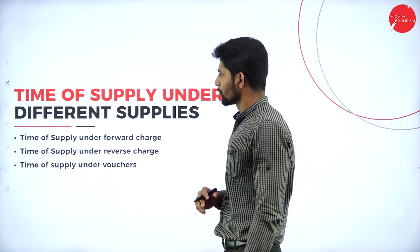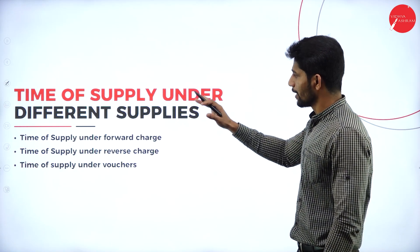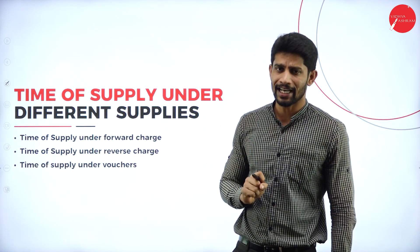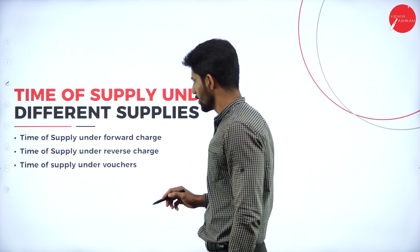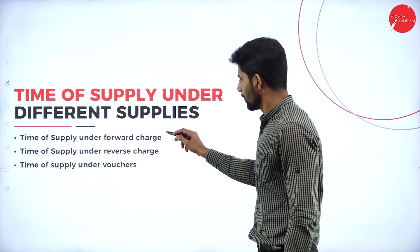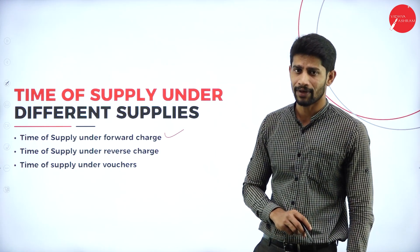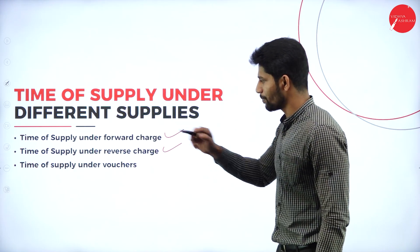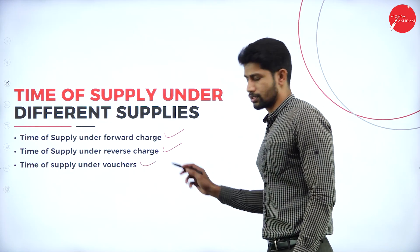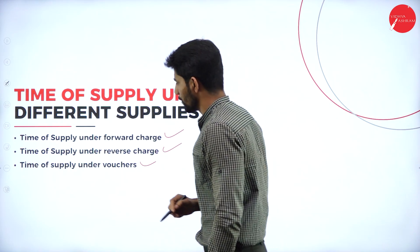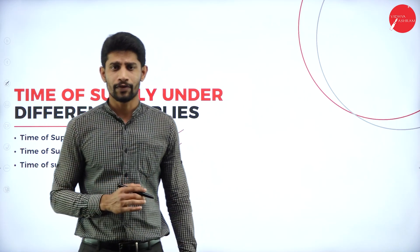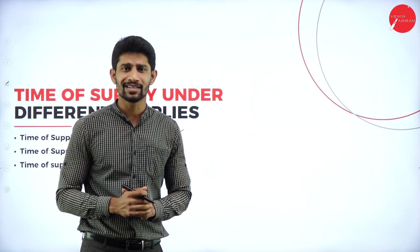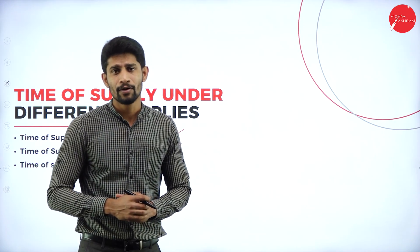Now let us look at time of supply under different types of supply. Mainly we have three types: the first one is time of supply under forward charge, the second one is time of supply under reverse charge, and time of supply under vouchers. Let us understand the meaning of forward charge.